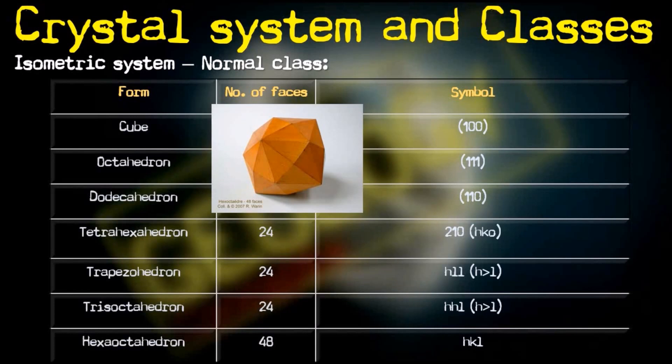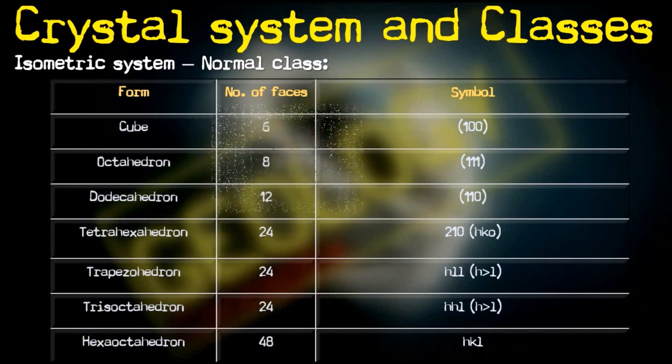So this was about crystal systems and classes. I hope you enjoyed the video. For the normal class, we must remember all the forms and all the classes of the isometric system.